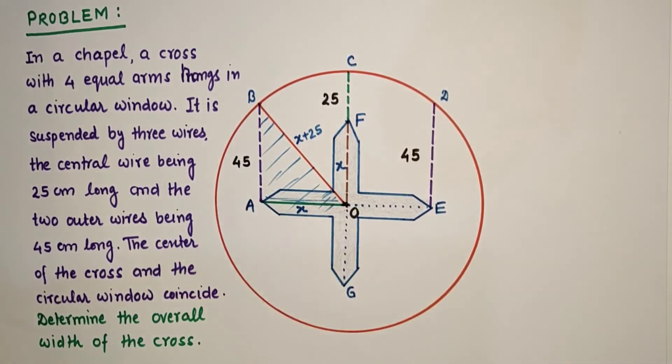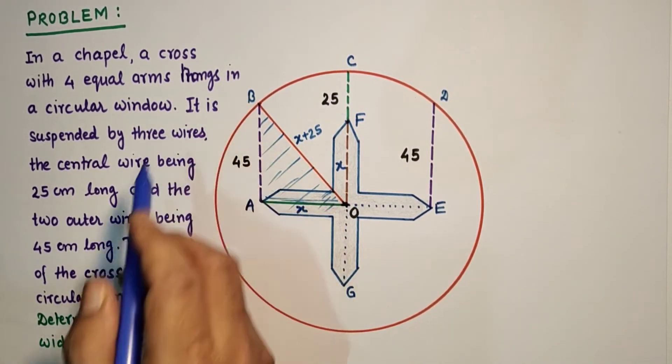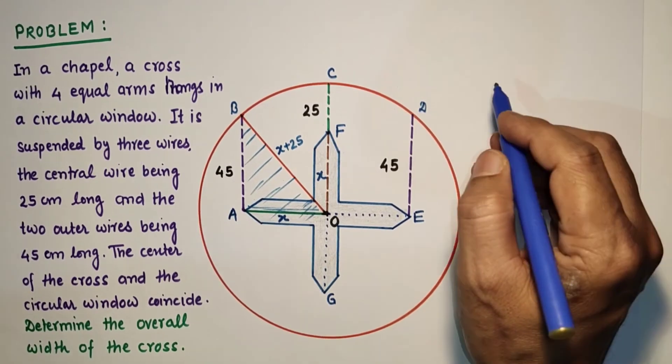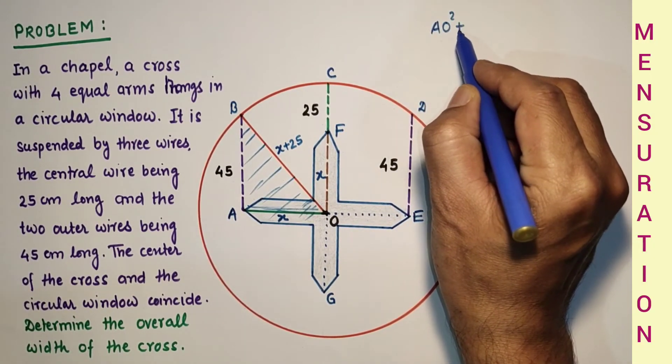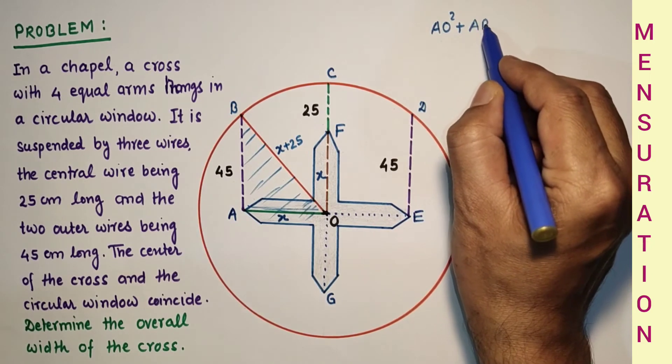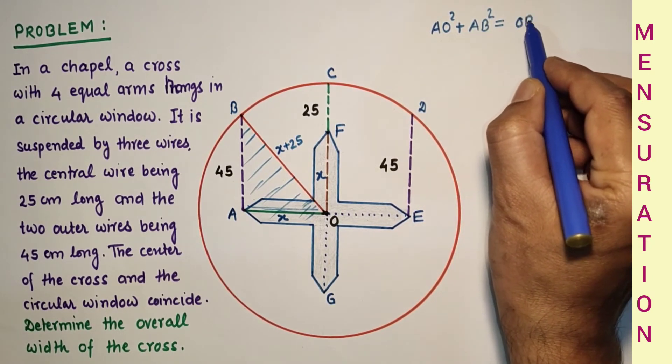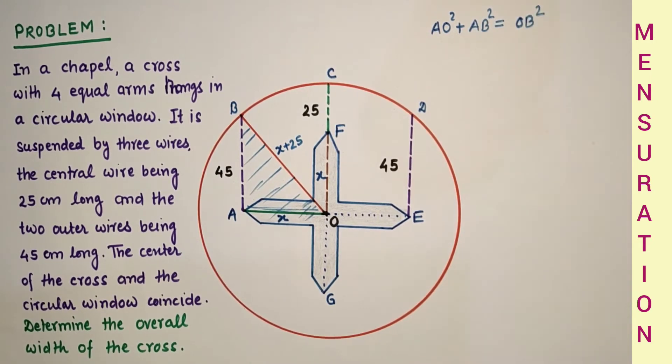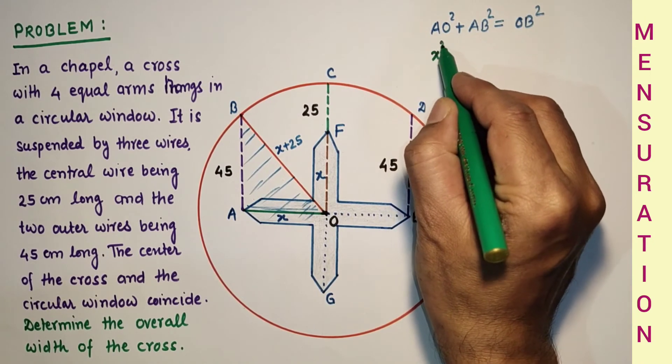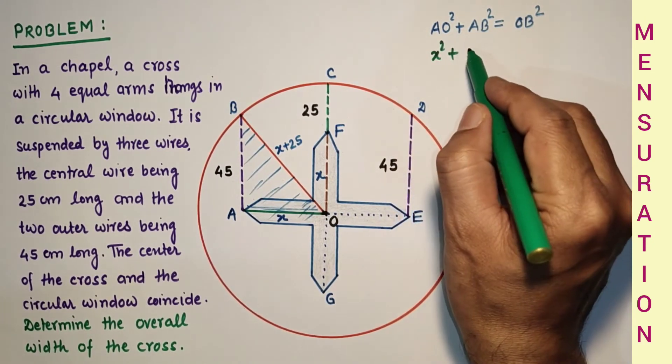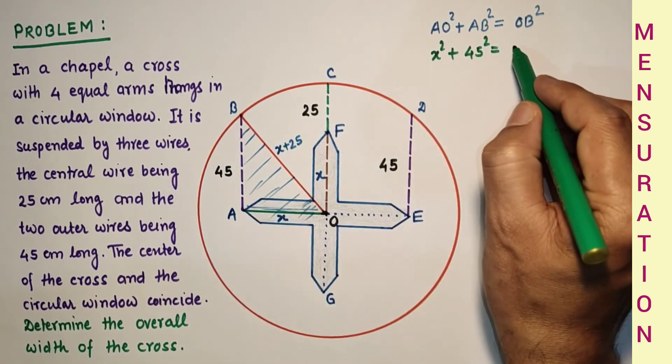So using Pythagoras theorem, OB square is equal to AB square plus AO square. So by Pythagoras theorem, AO square plus AB square which is equal to OB square. So we have assumed AO as X, X square plus AB is 45 square, and this is X plus 25 the whole square.